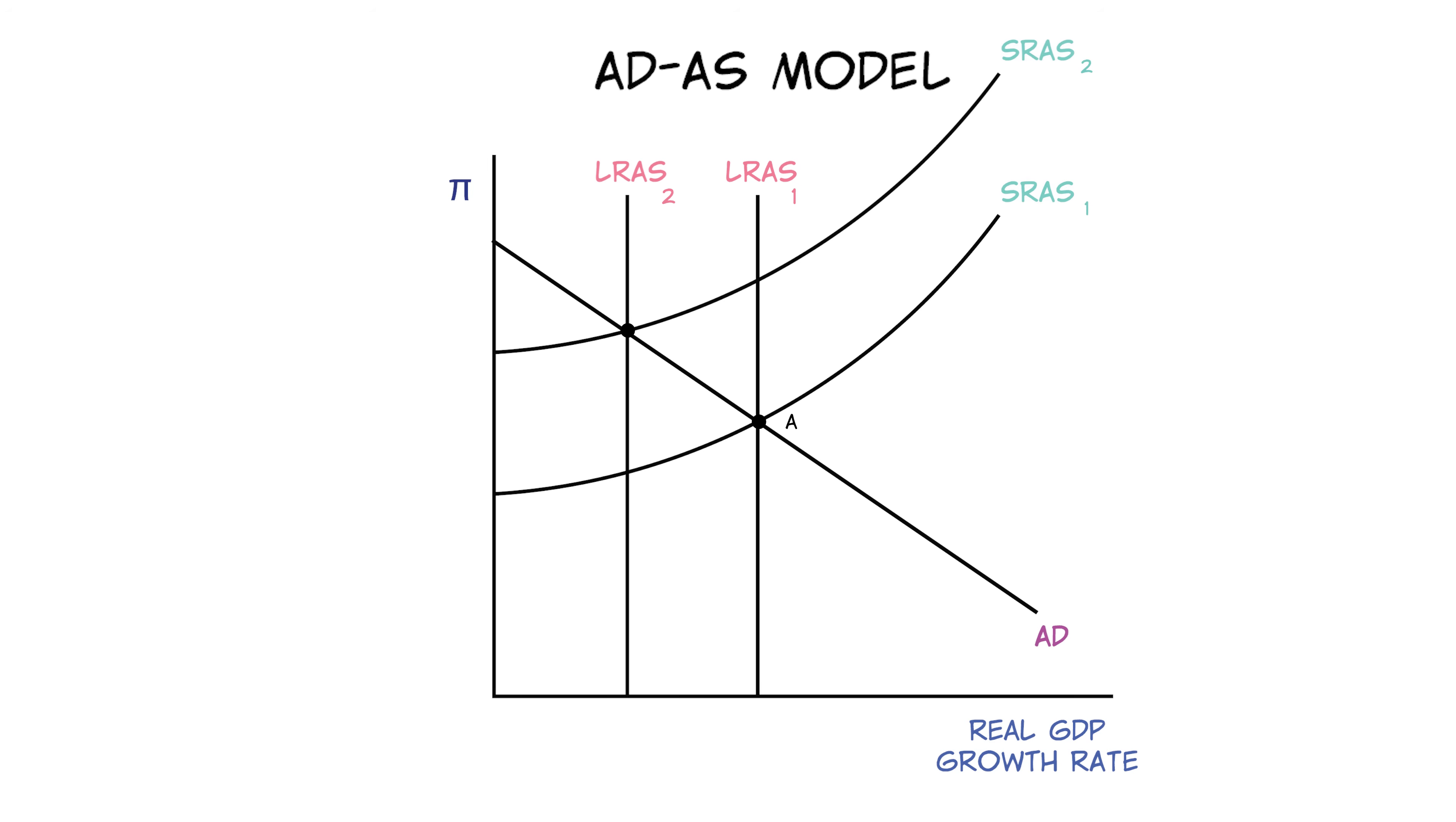But if the central bank sees higher inflation and decides to reduce the inflation rate by slowing the rate of money growth, this leads to an inward shift in the AD curve, causing a fall in inflation and real GDP growth. So both shocks cause GDP to fall, but the change in inflation is ambiguous. An oil shock pushed up inflation, while a decrease in money growth pushed it down.